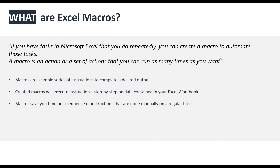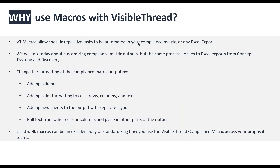If you have customization tasks you normally perform on every compliance matrix or concept export, you can automate these using macros. Any manual step-by-step tasks in your outputs — even ones that only take a minute or two — can be error-prone when done repeatedly, but they're possible to automate. Macros with VisibleThread allow specific repetitive tasks to be automated in your compliance matrix output or any Excel export from VisibleThread Docs.